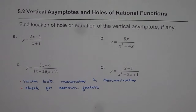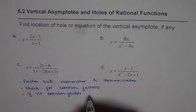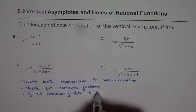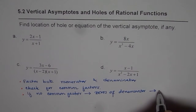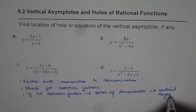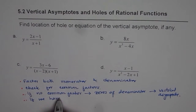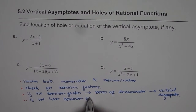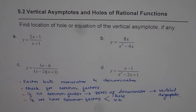If there are no common factors between the numerator and denominator, then the zeros of the denominator lead to a vertical asymptote. But if we do have common factors, then there are two possibilities — we can either get a hole or a vertical asymptote. We will do these examples to understand.